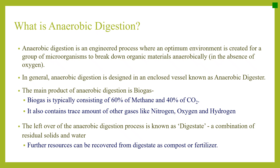The main product of anaerobic digestion is biogas. Biogas typically consists of 60% methane and 40% CO2. It also contains trace amounts of other gases like nitrogen, oxygen, and hydrogen. The leftover of the anaerobic digestion process is known as digestate, a combination of residual solids and water. Further resources can be recovered from digestate as compost or fertilizer.